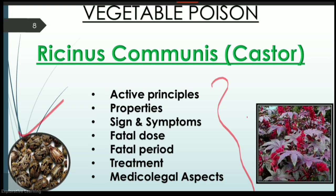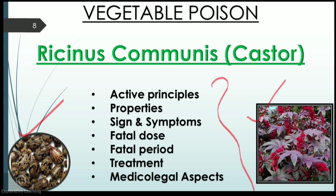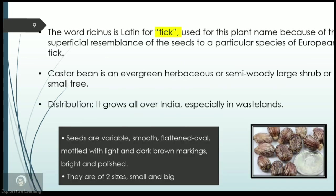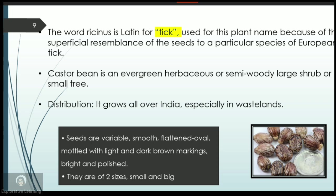These are the seeds of Ricinus communis, and they are the most poisonous thing found in plants. These are the beautiful leaves of Ricinus communis. The name 'ricinus' is derived from a Latin word meaning 'tick,' an insect, because the seed of Ricinus communis resembles the tick found in the European continent.